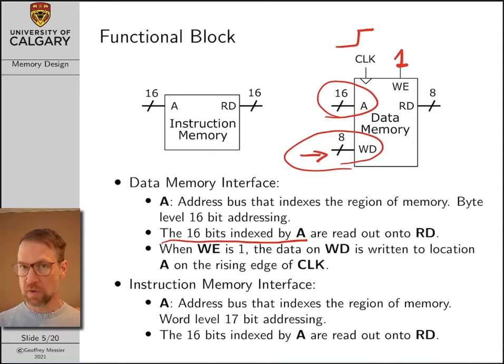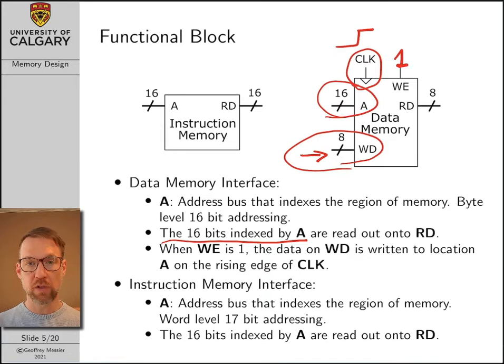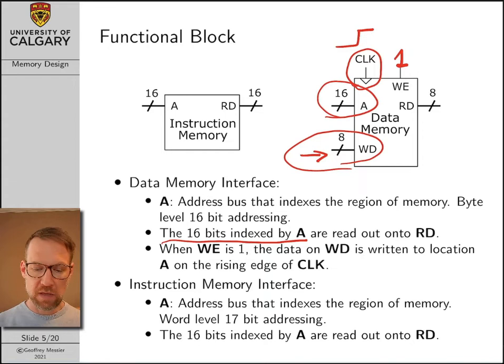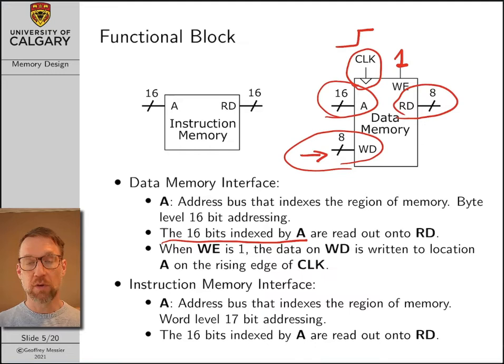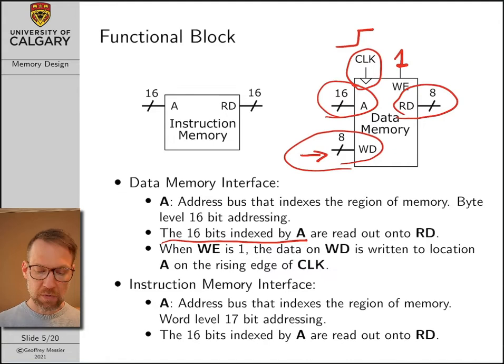Once write enable is equal to 1, on the next rising edge of our clock, the value on the WD bus is written to the location specified by the address bus. The address bus is used for both reading and writing. Writing uses the clock input — a write only occurs on the rising edge of the clock. However, reading uses a combinational logic design rather than a synchronous logic design. The value on the read bus changes immediately as soon as the value on the address bus changes, plus a little propagation delay. The write only occurs on the rising edge of the clock signal.